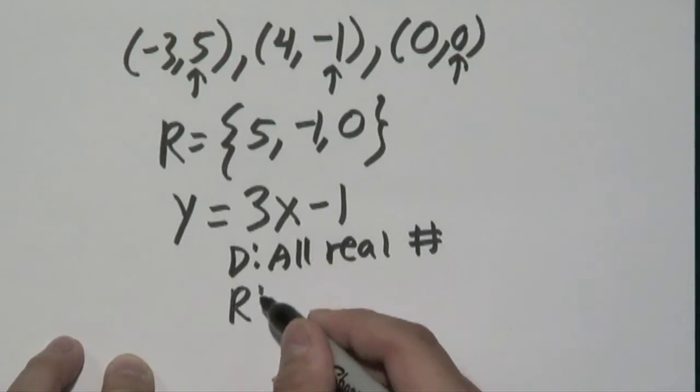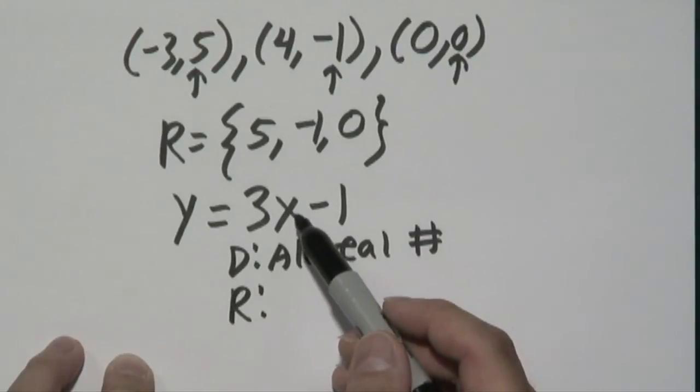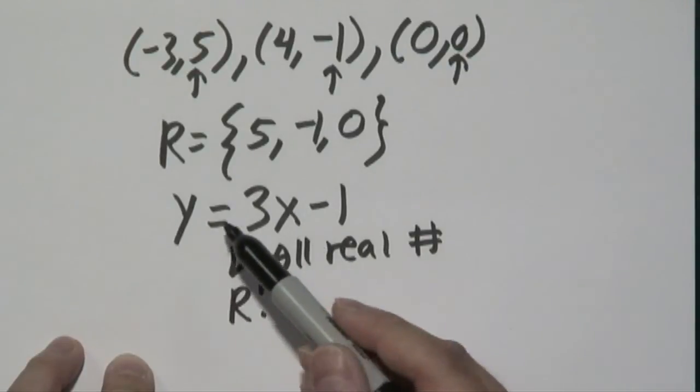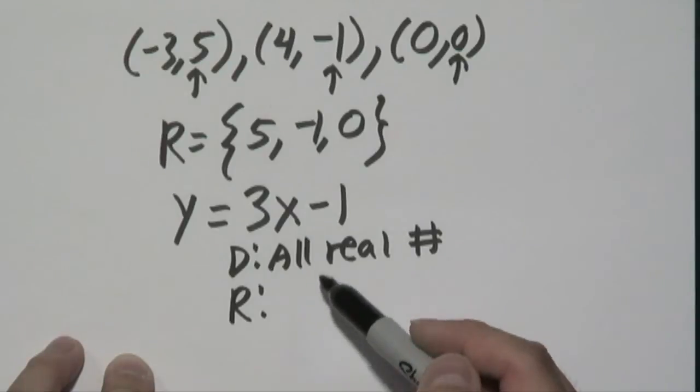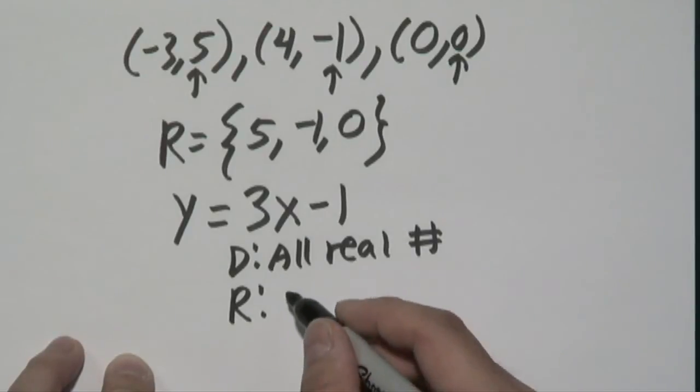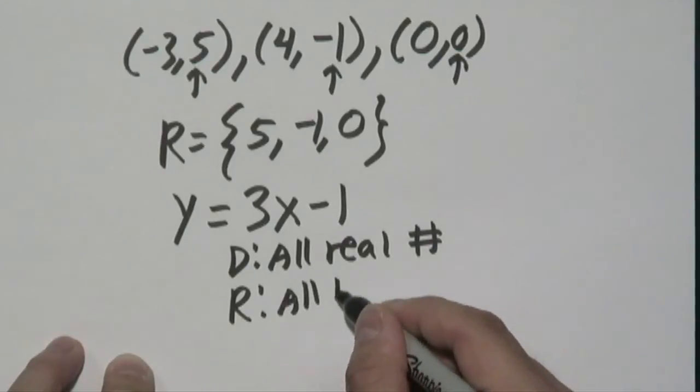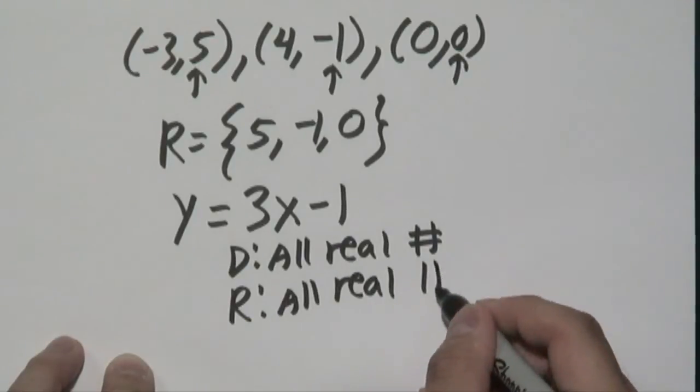So at this particular point, since you can plug in any number you want for x, for this example, any number for y is what's going to result from this given the structure. So the range, in this case, is also all real numbers.